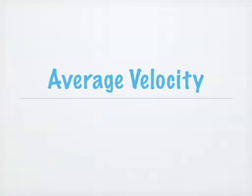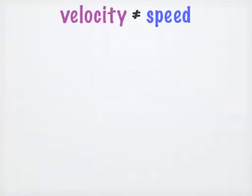In physics, average velocity is one of the characteristics of an object that we use to describe its motion. We do not consider velocity to be the same thing as speed.